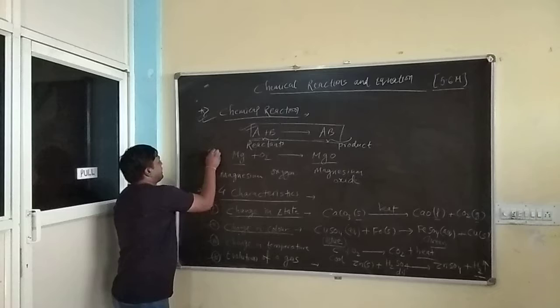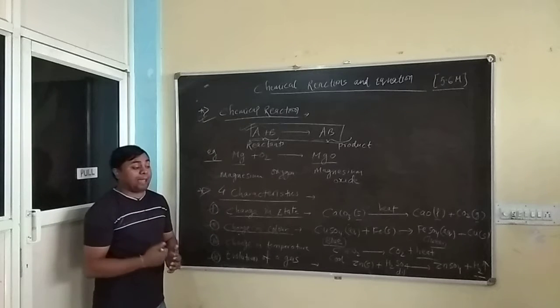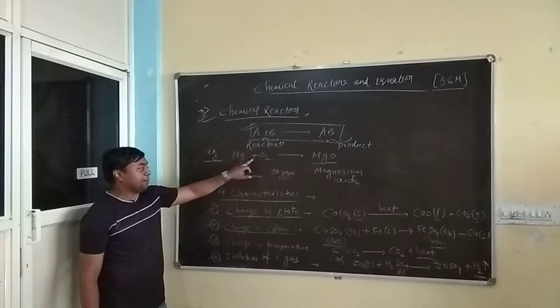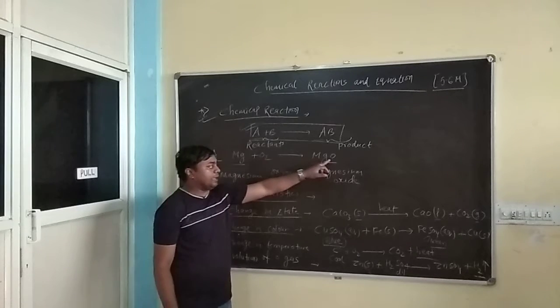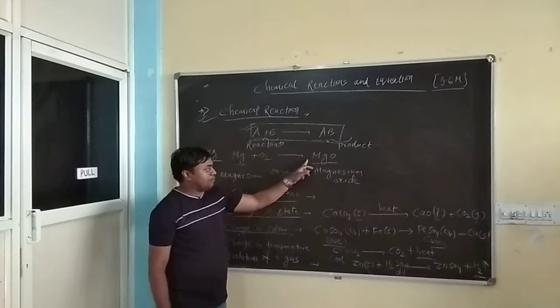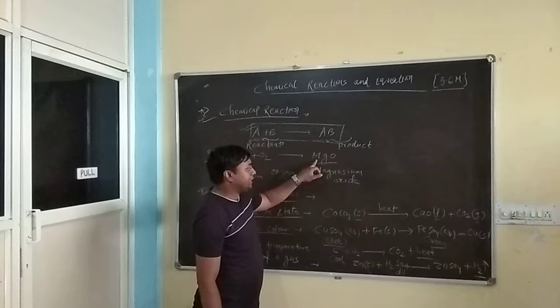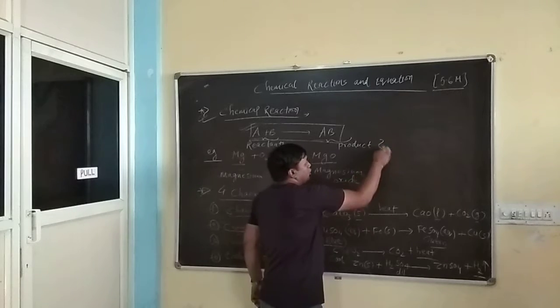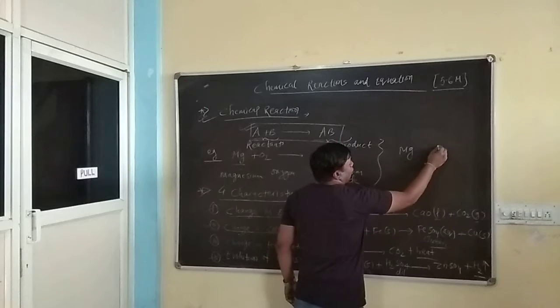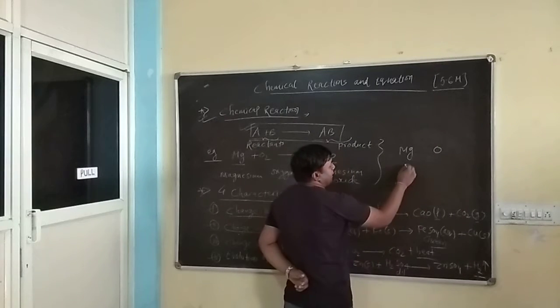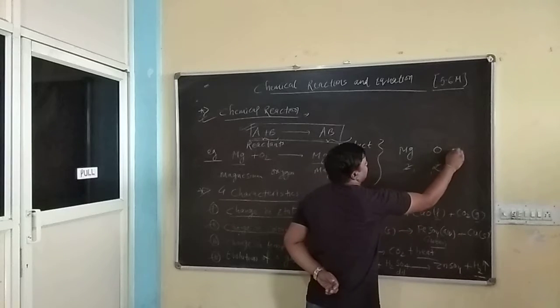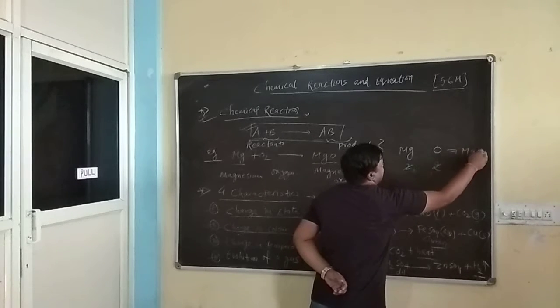For example you can say burning of magnesium. Whenever we burn the magnesium we will get magnesium oxide. For example Mg combined with O2 gives you MgO. Mg stands for Magnesium, O2 Oxygen, MgO Magnesium oxide. How it is MgO only? You should know how to write the chemical formula. Magnesium Mg, oxide stands for O. Valency of magnesium is 2, Oxygen is also 2, so it will cancel. So by criss cross method the formula of magnesium oxide is MgO.